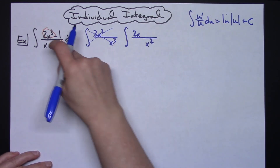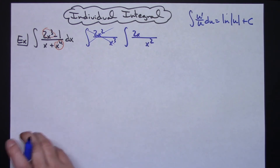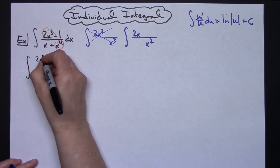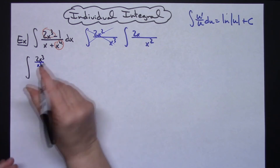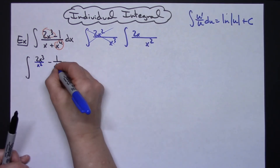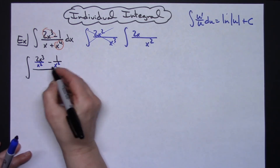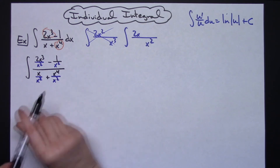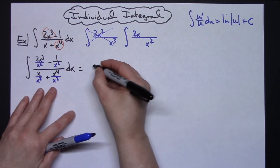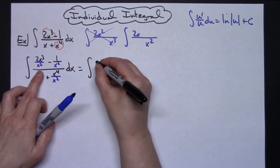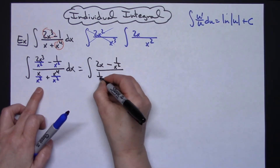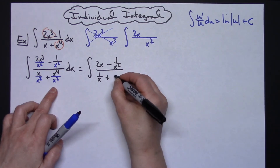So let's divide through by x squared and see if that gets us anywhere. I'm going to write out the integral showing all the algebra: 2x to the third divided by x squared, minus 1 over x divided by x squared, all over x divided by x squared plus x to the fourth divided by x squared. Simplifying that, I have the integral of 2x minus 1 over x squared, all over 1 over x plus x squared.